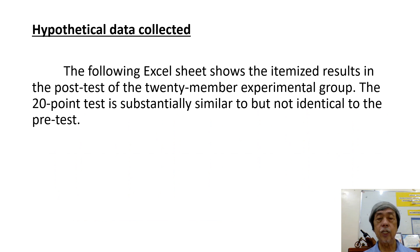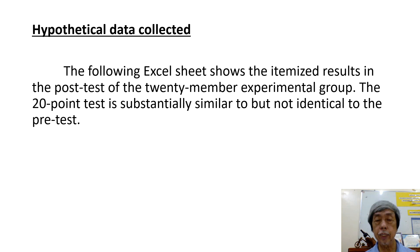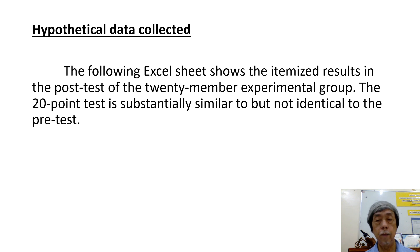The following Excel sheet shows the itemized results in the post-test of the 20-member experimental group. The 20-point test is substantially similar to, but not exactly identical to, the pre-test.